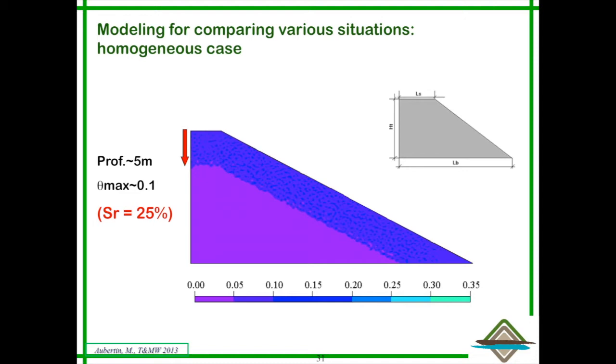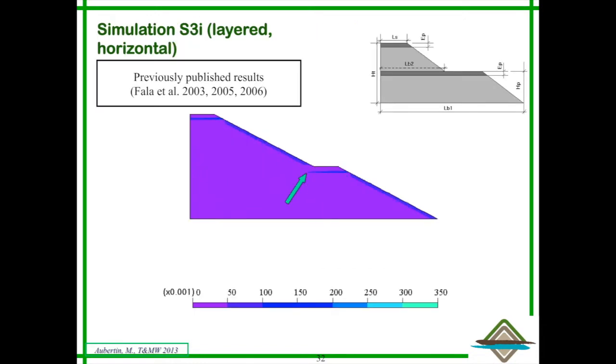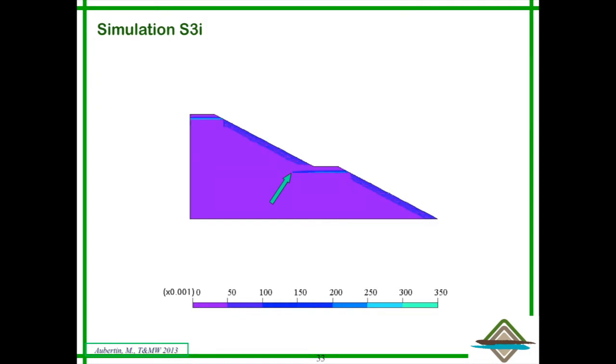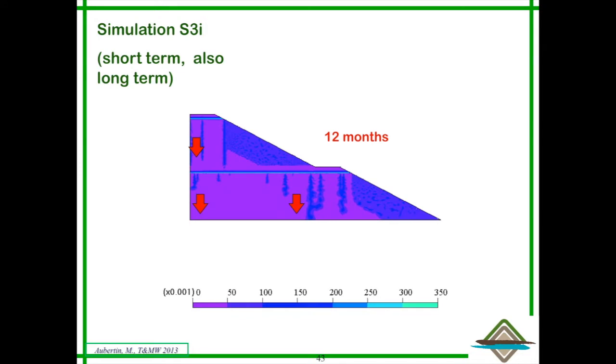In fact, when you include these compacted layers which are denser and have different properties that have been measured in the field and in the lab, this is what is happening. Water tends to move according to these layers because of a capillary barrier type of effect. Water is moving deeper and close to the core because of these layers, so it changes quite a bit how you assess the response of a waste stockpile in this case.